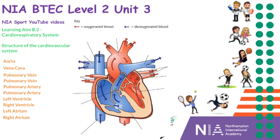NIA BTEC Sport level 2, unit 3 — this is learning aim B.2: the cardiorespiratory system. In this video we're going to be looking at the structure of the cardiovascular system. Also referred to as the circulatory system, it consists of the heart, blood vessels, and blood. It forms a major transport system in your body which carries food, oxygen, and all other essential products to tissue cells, and takes waste products and carbon dioxide away. Oxygen is transported from the lungs to the body tissues, while carbon dioxide is carried from the cells to the lungs.